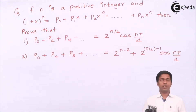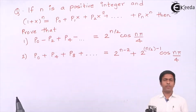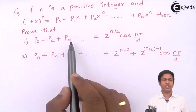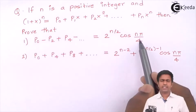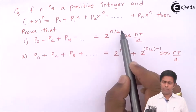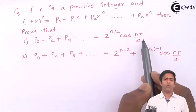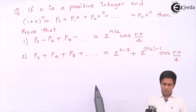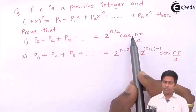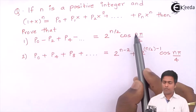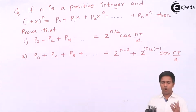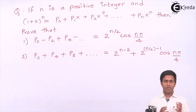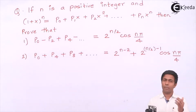Let's start with the first result. In the first result we want all even terms with alternate plus and minus signs, and on the right-hand side we have 2^(n/2) · cos(nπ/4). If you see the right-hand side, we want cos(nπ/4), and that polar form itself denotes that we are going to use the polar form of a complex number.